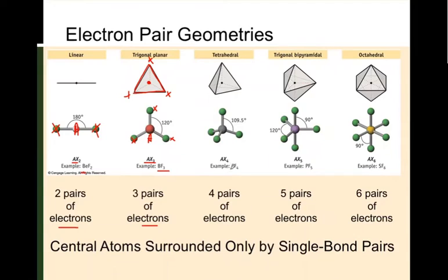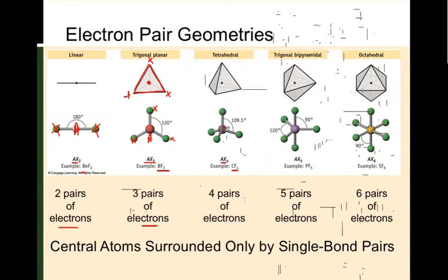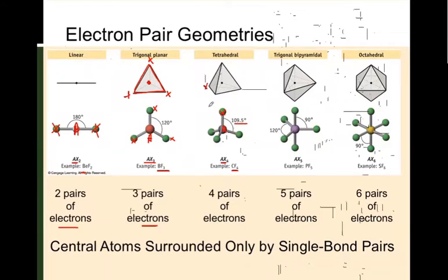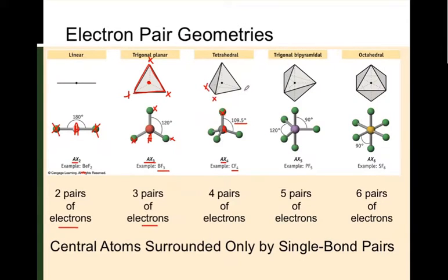Tetrahedral structures — for example tetrafluoromethane — have the formula AX4, where A is the central atom and X is the bonded atoms. This has a bond angle of 109.5 degrees, as we already saw with methane. On each corner of the tetrahedron we have a bonded atom X, and A is the central atom in the middle. The bond angles here are 109.5 degrees.